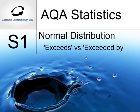The normal distribution exceeds versus exceeded by. We have a normal distribution here where the population mean is equal to 50, the population variance is 25, so the population standard deviation, which is the square root of the variance, is 5.